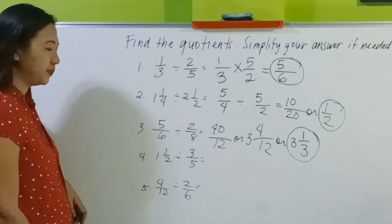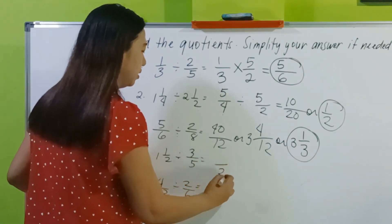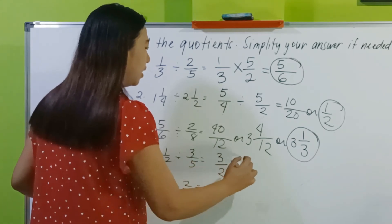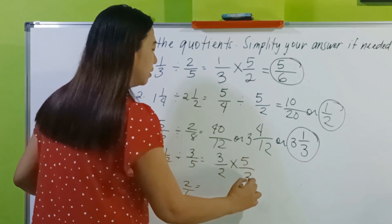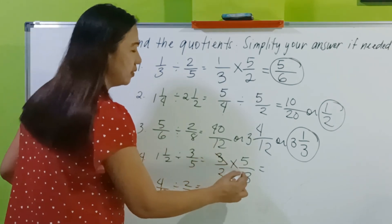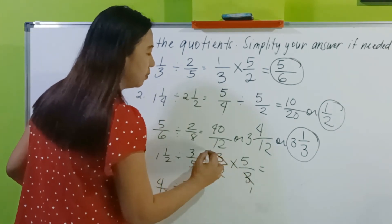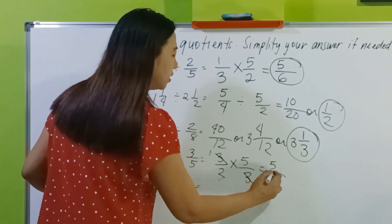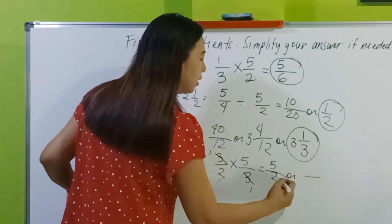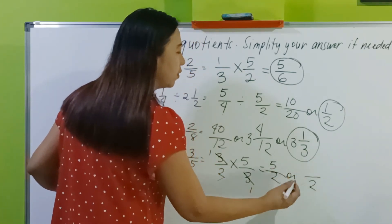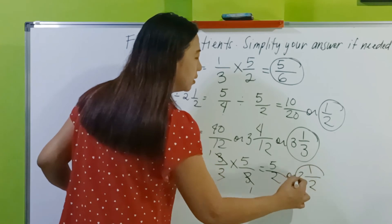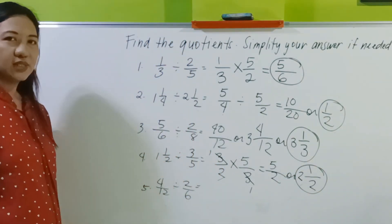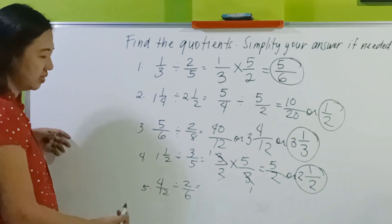Number 4: change the mixed number to improper — 2 times 1 plus 1. This becomes times and find the reciprocal. You may cancel if you like. Multiply the numerators: 1 times 5 is 5, 2 times 1 is 2. How many 2s are there in 5? We have 2 and remainder 1 — so 2 and 1 half.